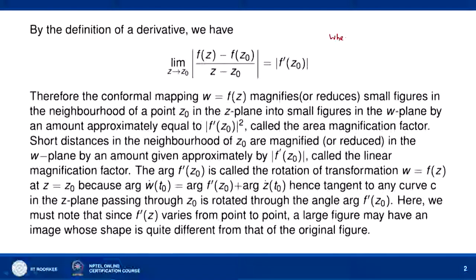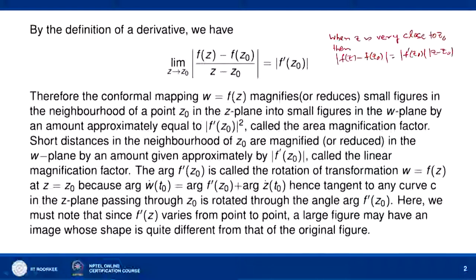When z is very close to z0, |f(z) - f(z0)| is approximately equal to |f'(z0)| · |z - z0|. Therefore, the conformal mapping w = f(z) magnifies or reduces small figures in the neighbourhood of a point z0 in the z-plane into small figures in the w-plane by an amount equal to |f'(z0)|², called the area magnification factor.